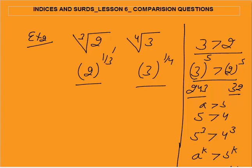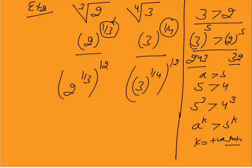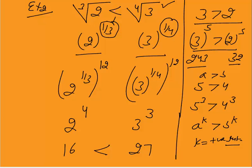Now, 2^(1/3) and 3^(1/4) — we need a common power divisible by both 3 and 4, which is 12 (the LCM). Raising both to the power 12 will not change the inequality. So we get 2^(12/3) = 2^4 = 16, and 3^(12/4) = 3^3 = 27. Since 27 is greater than 16, we conclude that 3^(1/4) is larger than 2^(1/3).